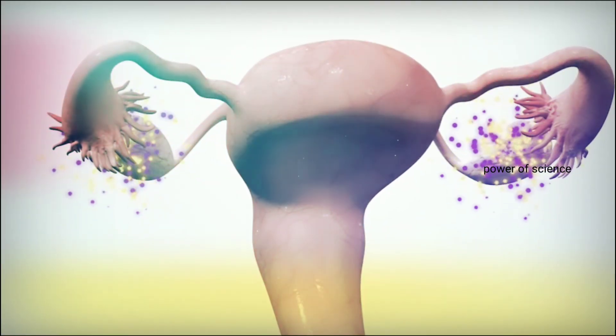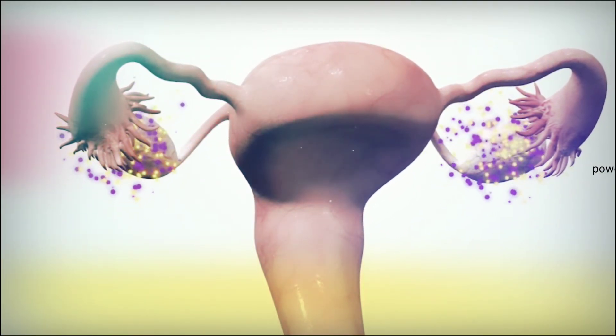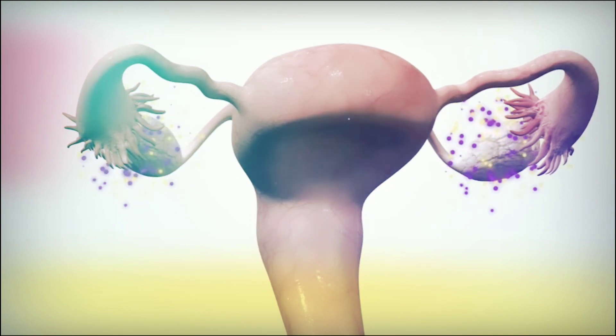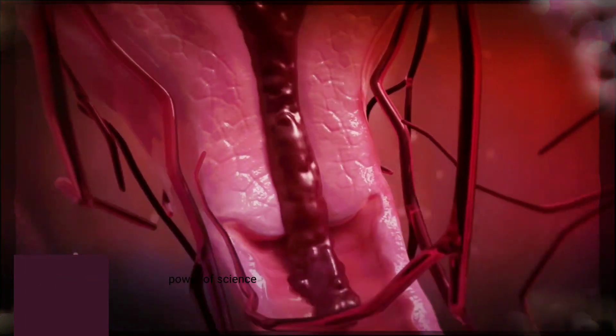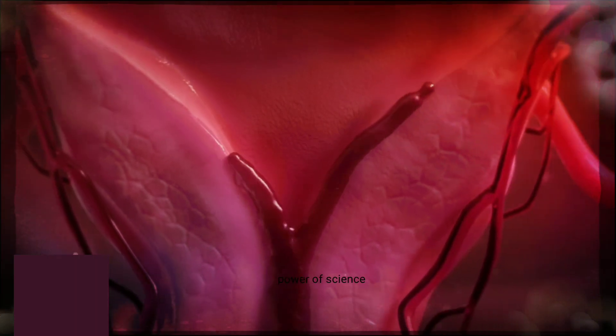But if the egg is not fertilized, after 28 days the cells of the corpus luteum stop producing progesterone hormones, due to which the endometrium lining does not sustain and is shed from the vagina in the form of a period. And thus a new menstrual cycle begins again.